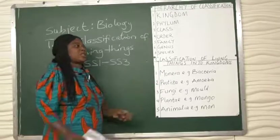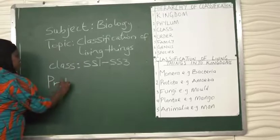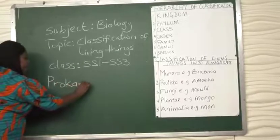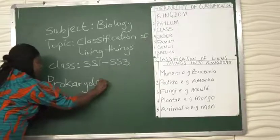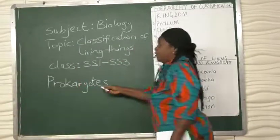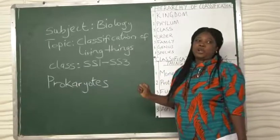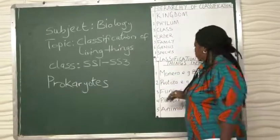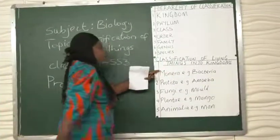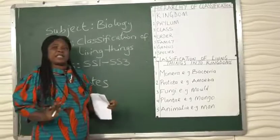These ones are known as prokaryotes. That means they don't have definite nucleus. The ones grouped in the kingdom monera don't have definite nucleus.